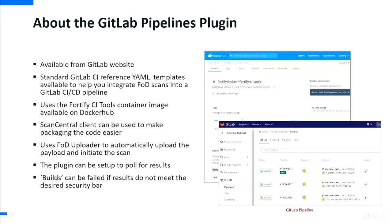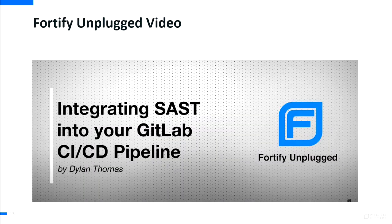There is also a GitLab Pipelines plugin, available from the GitLab website — also recently introduced. Standard GitLab CI reference YAML templates are provided to help you understand how to do the integration. This uses the Fortify CI Tools container image, available on Docker Hub. You can optionally use the ScanCentral client to make packaging easier. It uses FOD Uploader to upload and initiate the scan, can be set up to poll for results, and you can optionally fail the build if it doesn't meet the desired security bar.